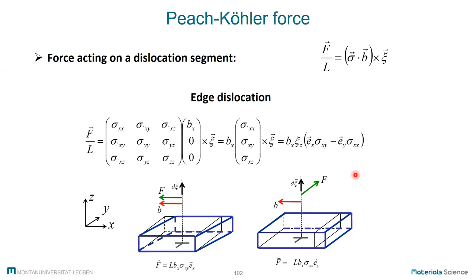This expression can also be used for mixed dislocations — it is valid in general and can always be used to see how a dislocation would react to an applied shear stress locally. It can also be evaluated at one specific point of a curved dislocation, and if the stress itself varies, one can always calculate locally on the dislocation line what force the dislocation segment sees at that point.